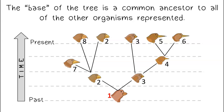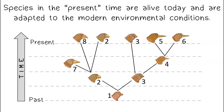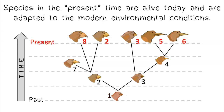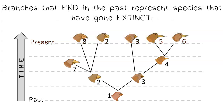The base of the tree is a common ancestor to all of the other organisms represented. Species in the present time are alive today and are adapted to the modern environmental conditions. Branches that end in the past represent species that have gone extinct.